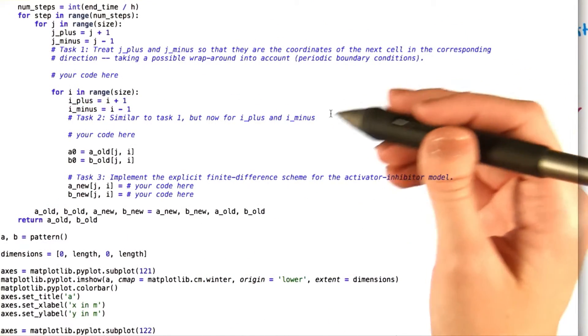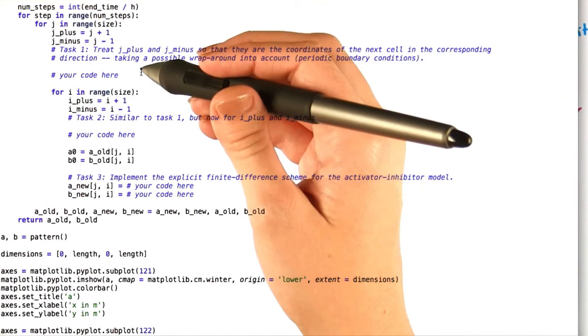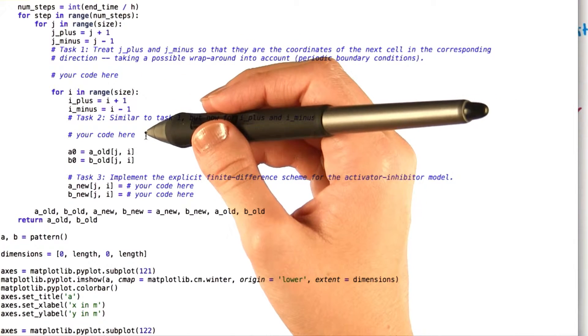So for task 1 and task 2 of this final problem, you're going to figure out what expressions are needed to ensure that these boundary conditions are put in place.